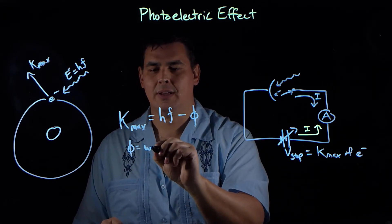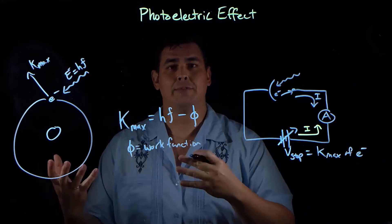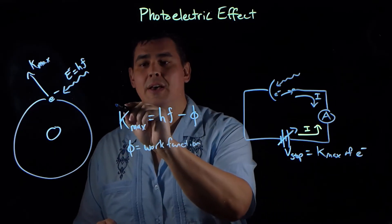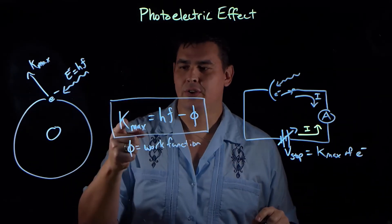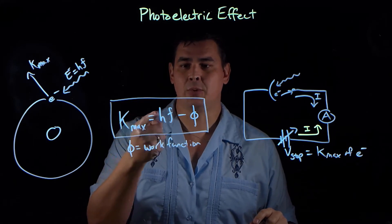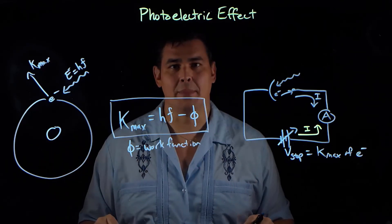So Einstein's equation says the maximum kinetic energy of the ejected electron is going to equal the energy you put in from the photon minus the work you have to do to free it. And that's called the work function, the Greek letter phi. And every metal has its own work function because all atoms are different, and it takes different amount of energy to free different things. But this equation is basically just conservation of energy. Your electron comes out with an energy equal to what you put in minus the work that you had to pay to get the electron to come out.